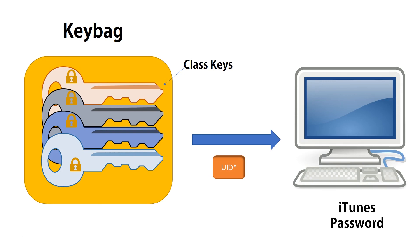That means you can move them to another phone. But if you don't use the iTunes password and you have an unencrypted backup, then the class keys are tied to the UID — tied to the device — and the backup can only be restored back to the same device.